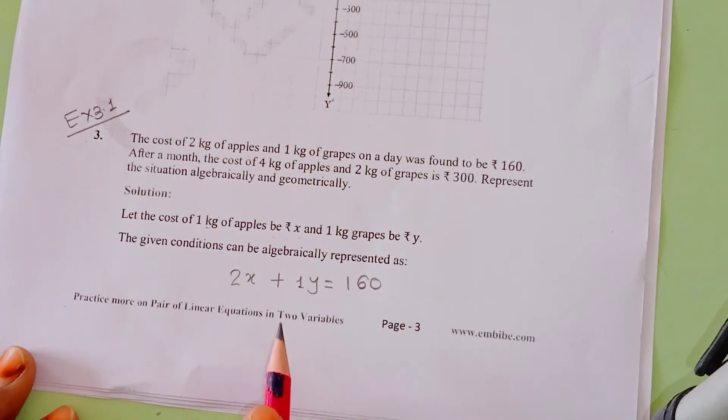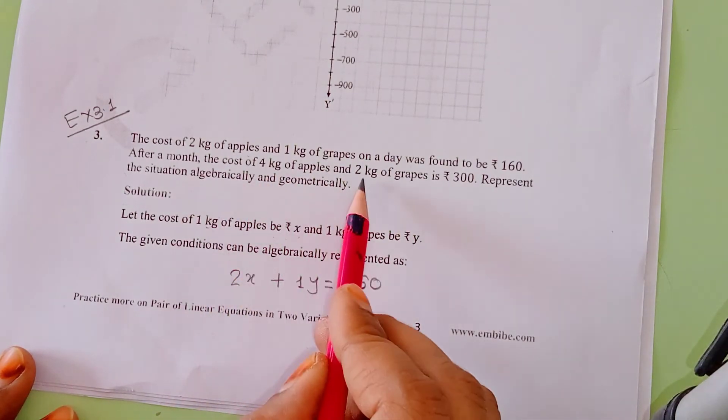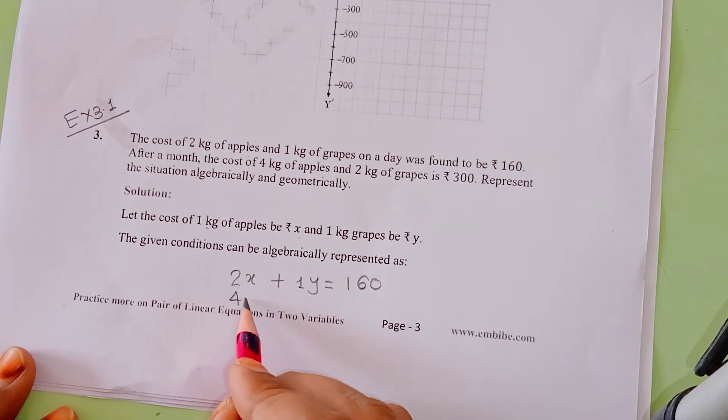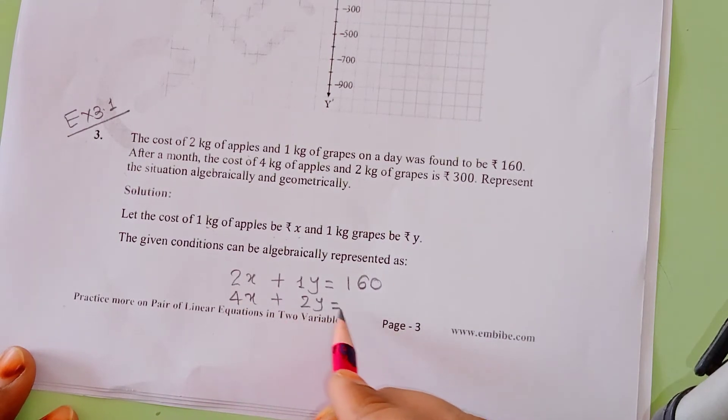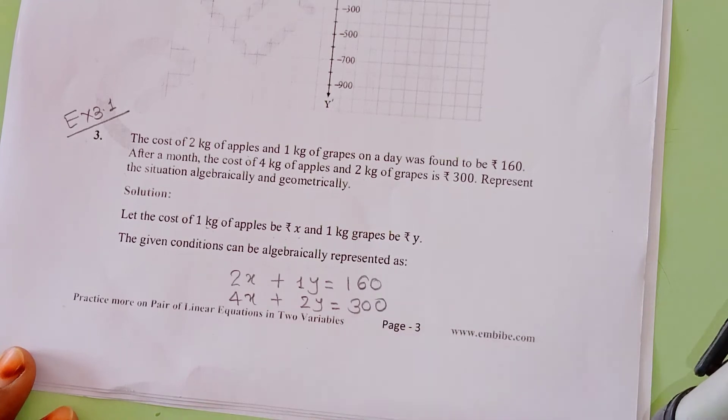Same like that, according to the second condition, we have 4 kg apples and 2 kg grapes and the total cost is Rs. 300. So this equation we can represent algebraically: 4x + 2y = 300.